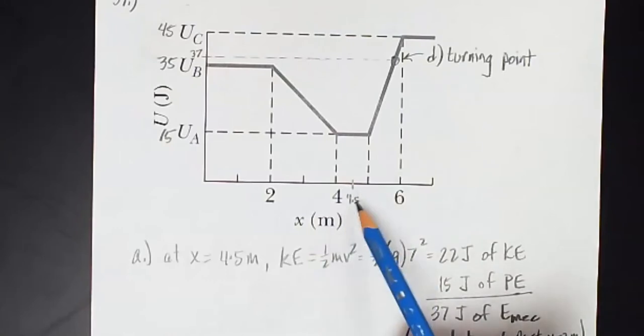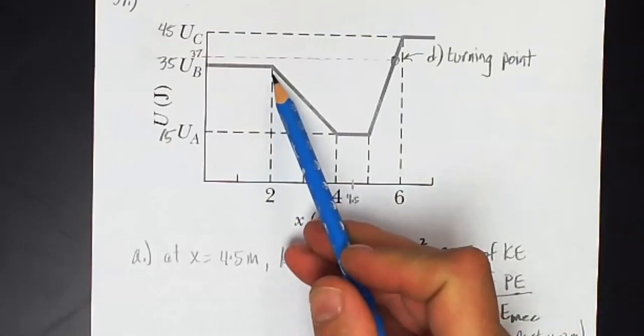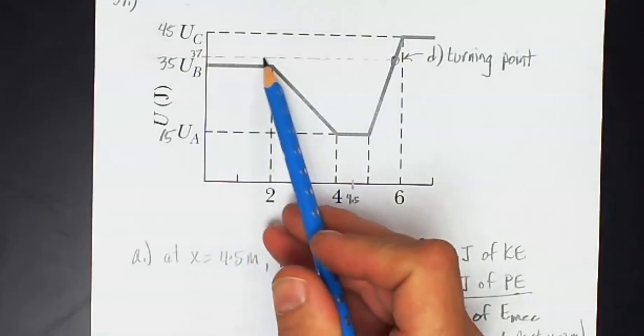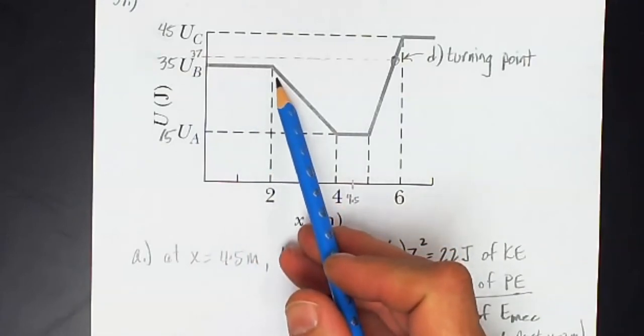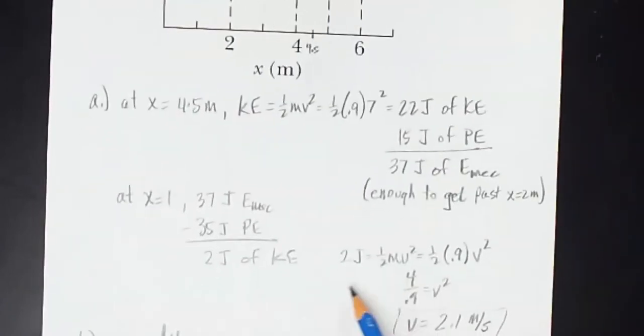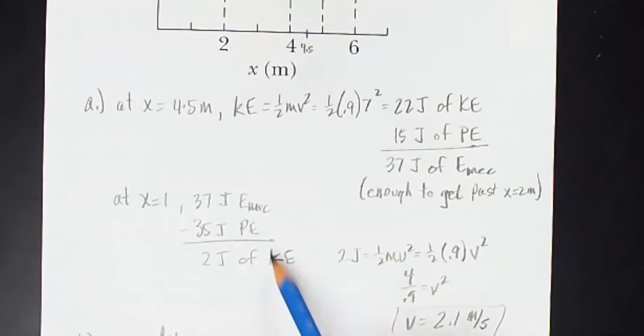If I were moving to the left, I need to have more than 35 joules of mechanical energy to get past this point. So I will get past x equals 2 meters, and I'll have 2 joules of kinetic energy left over. The difference between the potential energy at x equals 2 and the amount of mechanical energy that the particle has.